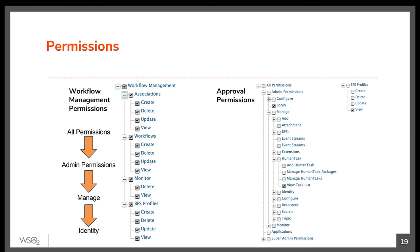These are the permissions that are needed to work with workflows in identity server. The workflow management permissions are needed to work with the management console to create, modify, view, and delete workflow definitions, associations, WSO2 BPS profiles, and to monitor or delete workflow requests. Approval permissions are needed for whoever is in the capacity of approving or denying an operation by logging into the user portal.